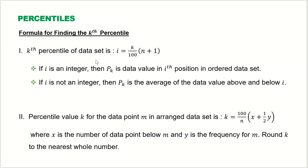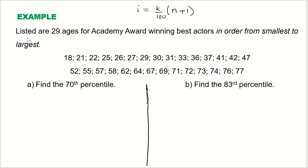Let's take an example. Listed are 29 ages of Academy Award-winning best actors, in order from smallest to largest. The data is already arranged and we have 29 observations, so n = 29. We are asked to find the 78th percentile and the 83rd percentile.